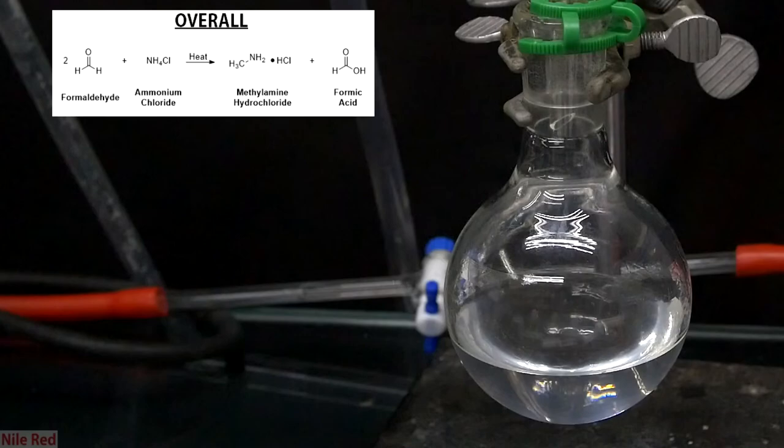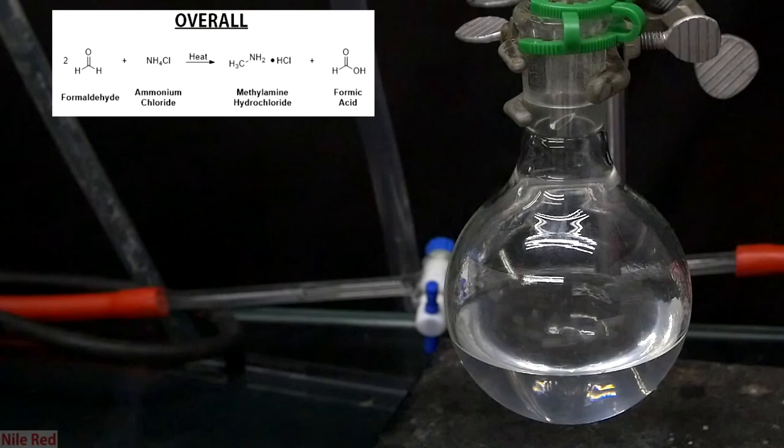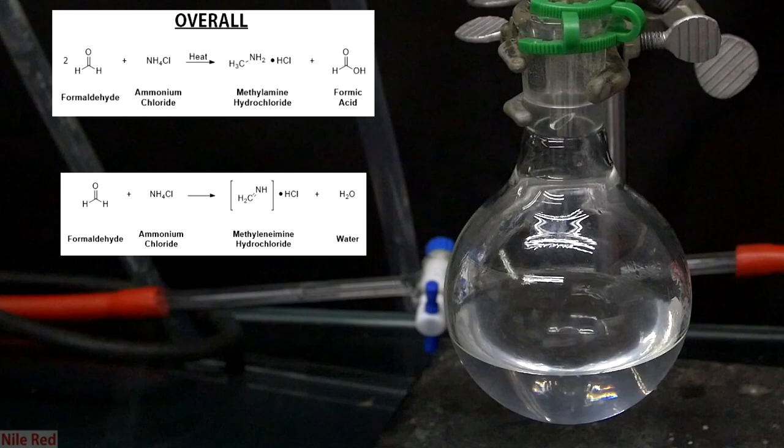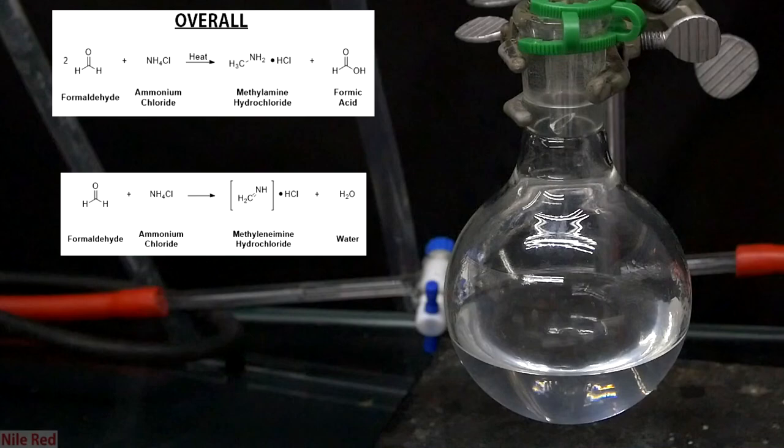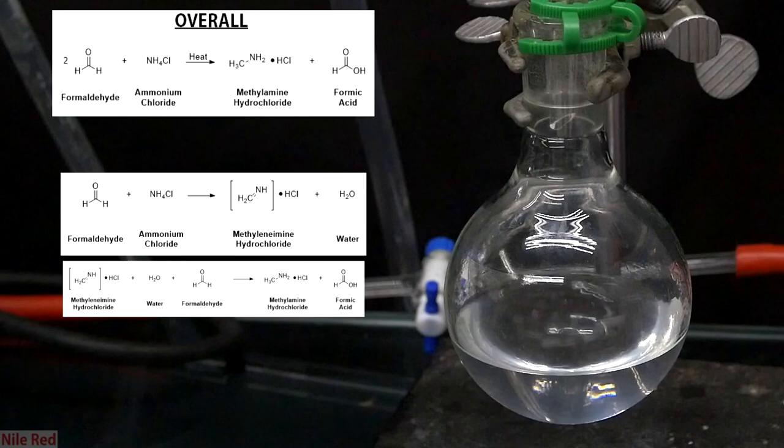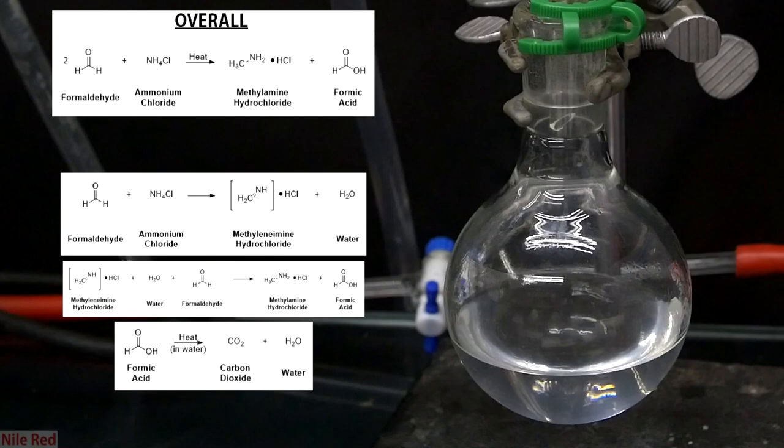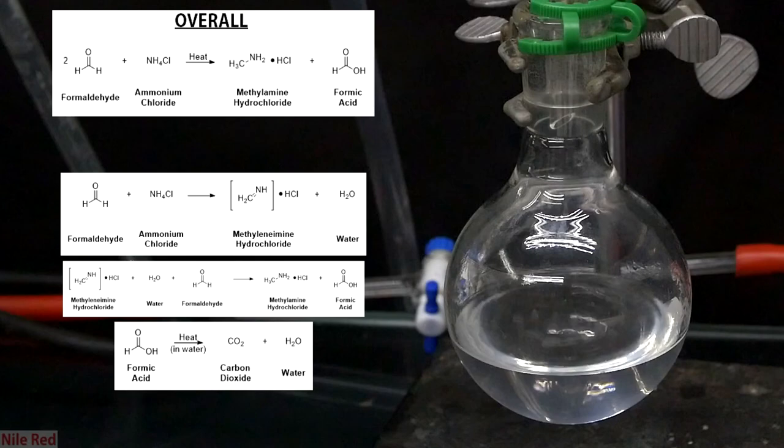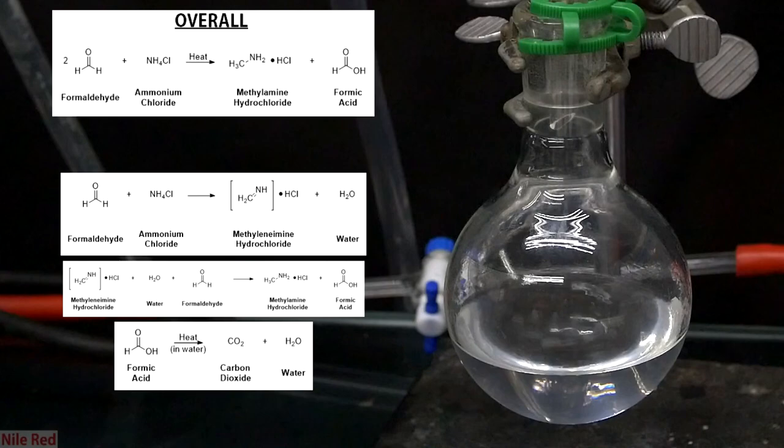This might take a little bit of trial and error, but once the temperature is stabilized, we keep it there for about three hours. The overall reaction that we're carrying out is shown here, where we are reacting formaldehyde with ammonium chloride to form our desired methylamine hydrochloride and formic acid as a side product. According to the procedure, the first thing that happens is a reaction between the formaldehyde and the ammonium chloride to form methylene amine hydrochloride and water. The methylene amine hydrochloride is then reduced by water to form our desired methylamine hydrochloride, and the formaldehyde is oxidized to produce formic acid. Under the heat of the reaction, though, the formic acid undergoes a decarboxylation, and it's converted to CO2 and water. We keep the reaction mixture around 104°C, because at this temperature, we produce few side products, but we still get a decent reaction rate.